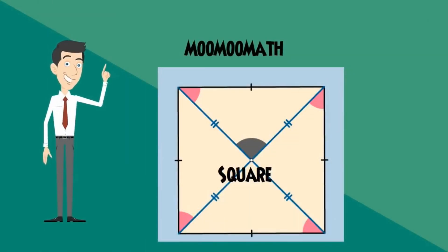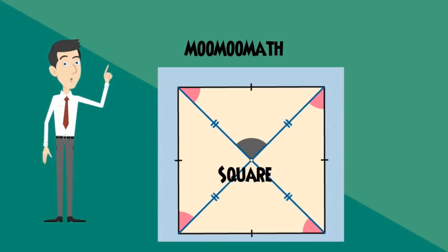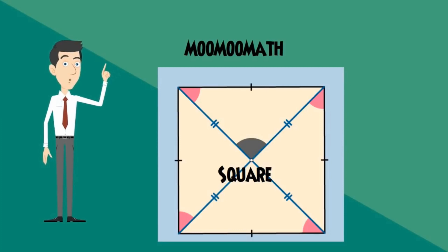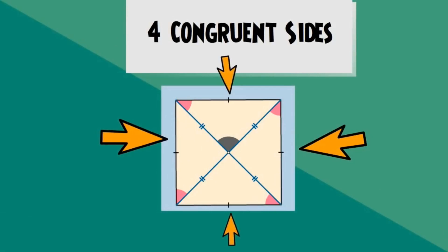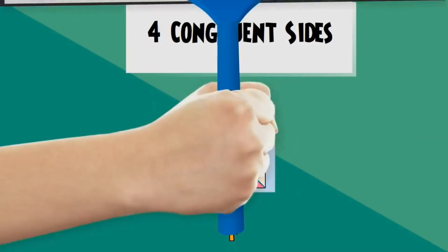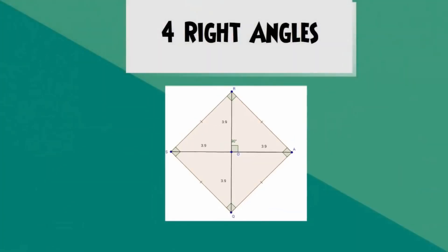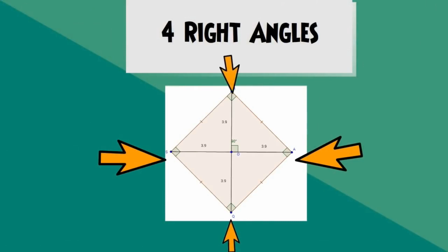Welcome to MooMooMath. In this video I'd like to talk about the properties of a square. A square is a plane shape. It is a quadrilateral that is two-dimensional, so it has length and width but no height. A square has four congruent sides — four equal sides. Along with these four sides, you have four right angles.